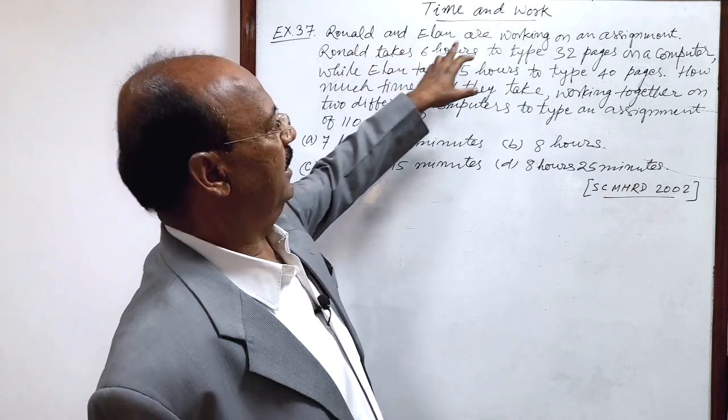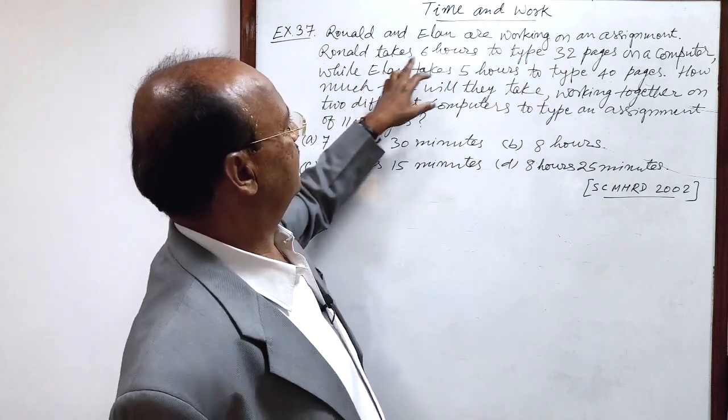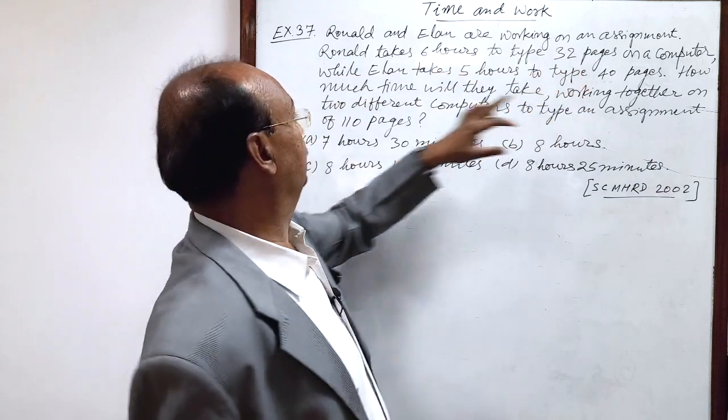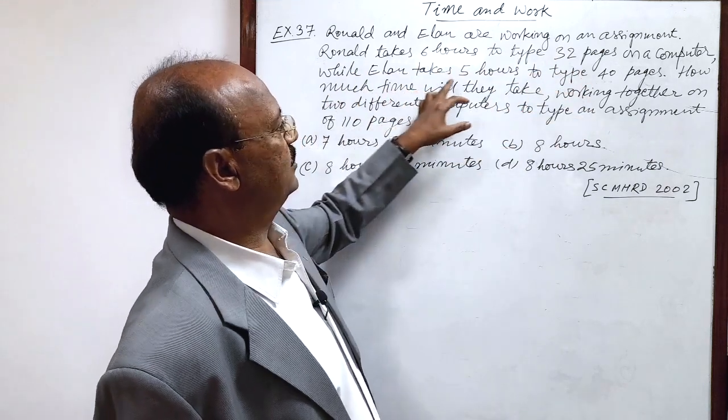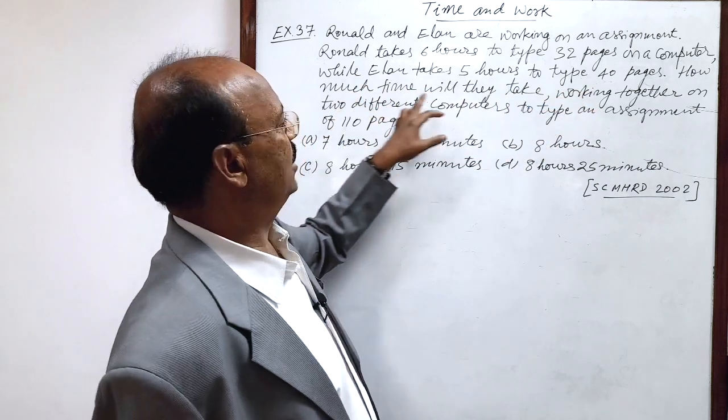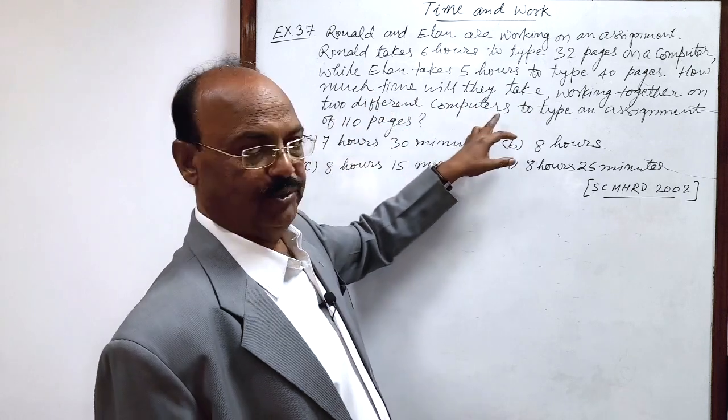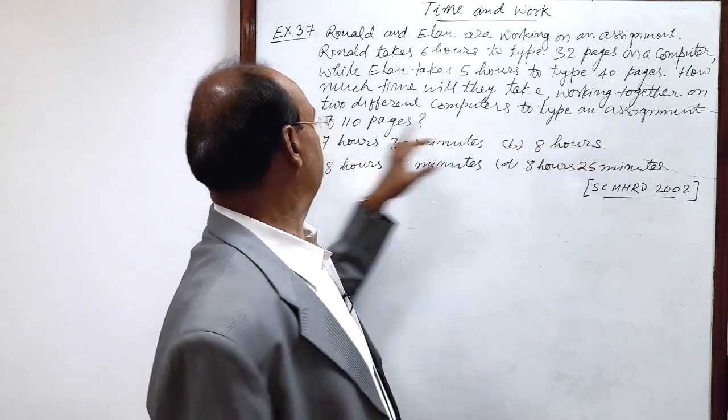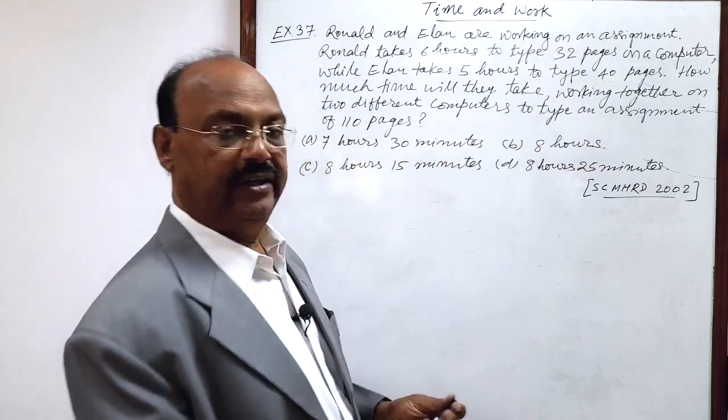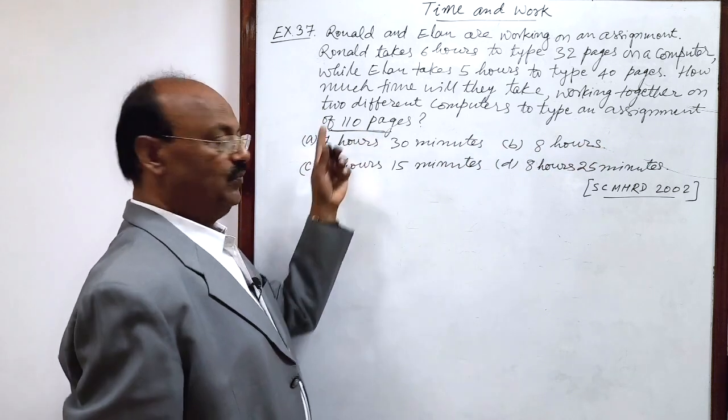Ronald and Alan are working on an assignment. Ronald takes 6 hours to type 32 pages on a computer, while Alan takes 5 hours to type 40 pages. How much time will they take working together on two different computers to type an assignment of 110 pages? Total pages of assignment is 110.